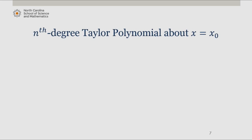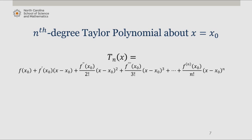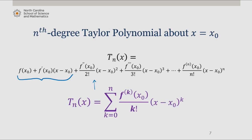To generalize further, we can think about the Taylor polynomial for a function about any point x equals x sub 0. Using the same process, we find that T sub n of x equals f of x sub 0 plus f prime of x sub 0 times x minus x sub 0 — which is our linear approximation — plus the second derivative of f at x sub 0 divided by 2 factorial times x minus x sub 0 squared, and so on up to the nth term. In summation form, this is the sum from k equals 0 to n of the kth derivative of f at x sub 0 divided by k factorial times x minus x sub 0 to the k.